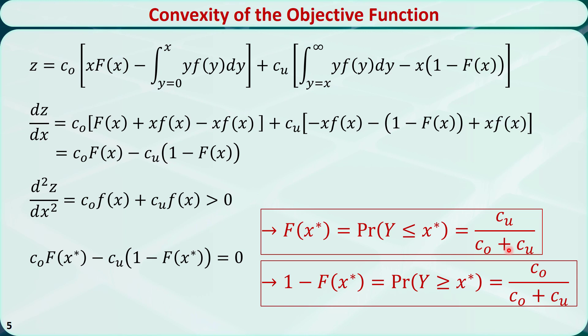This ratio is the overstocking probability. The complementary relation states that the probability of demand Y being greater than or equal to X* equals CO divided by the sum of CO and CU, which is the understocking probability.